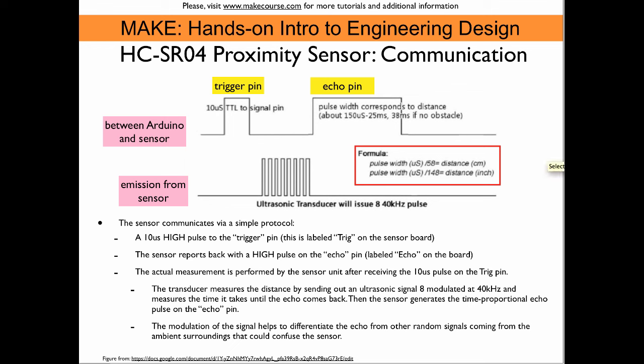It then produces a signal on the echo pin that is proportional to the measured distance. So the sensor now puts the echo pin from 0 to 5 volts, waits a certain time that corresponds to the distance, and then it goes back to 0. And that concludes the measurement.